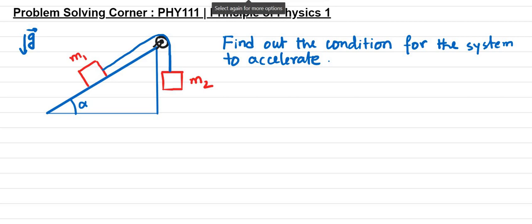If I have to draw a force body diagram, if I consider this object here, there are only two forces acting on it. One is the tension acting from the string, and another one is the weight, which is W2, which is M2G.